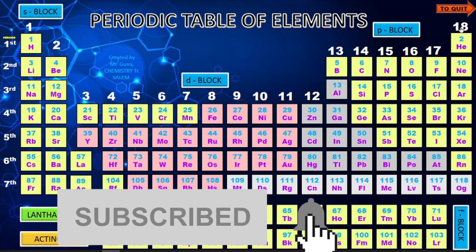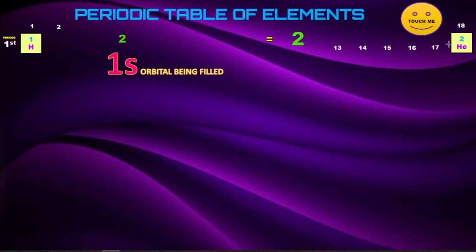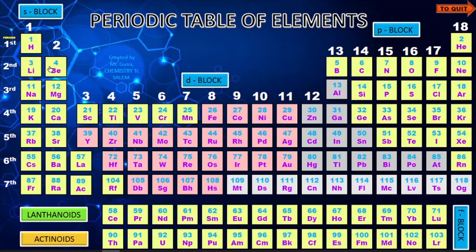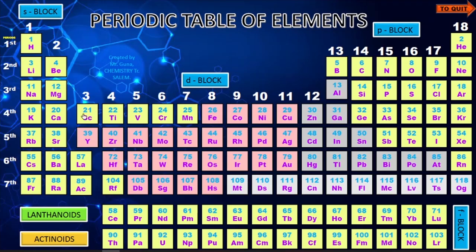You can also navigate period-wise. Clicking the first period takes you to a page showing only hydrogen and helium with the electronic configuration 1s1 and 1s2 being filled. For the second period, you can check the eight elements present. Similarly, you can check the third, fourth, fifth periods, and so on.